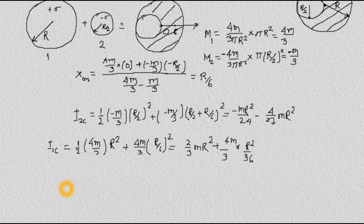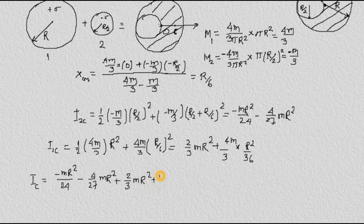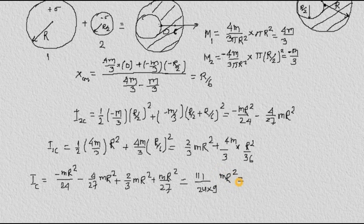The total moment of inertia of the given system about point C is I₁C + I₂C. Combining: −mR²/24 − 4mR²/27 + 2mR²/3 + mR²/27. This simplifies to (9/24)mR² times appropriate factors, giving a final answer of 37mR²/72.